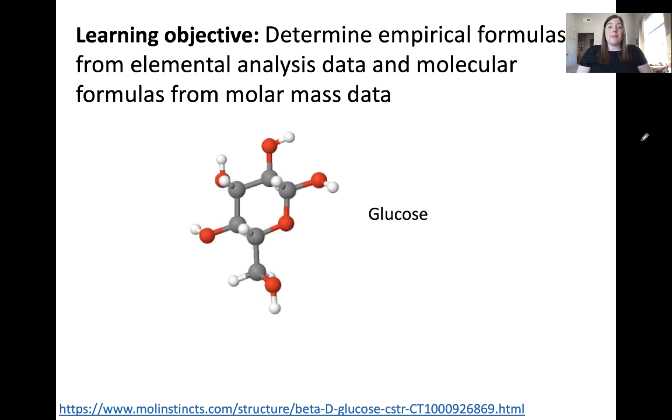To remind you, we can determine the molecular formula of a compound by identifying the number of atoms of each type in that molecule. In glucose, you'll see that there are 6 carbon, 12 hydrogen, and 6 oxygen atoms in one glucose molecule. This is called the molecular formula because it represents the actual composition of that molecule.